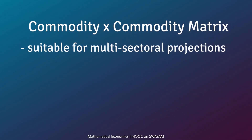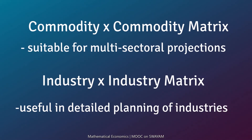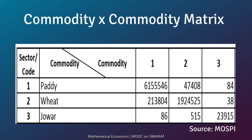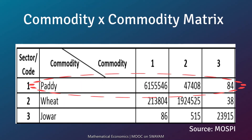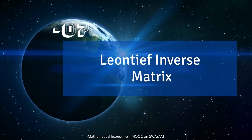The commodity by commodity input-output table is suitable for multi-sectoral projections where final demand estimates are obtained on a commodity basis. The industry by industry input-output table is useful in detailed planning of industries whose products include by-products. In a commodity by commodity table, both rows and columns represent commodity group sectors. In an industry by industry table, both rows and columns represent industry group sectors comprising a mix of different commodity groups. The row of a sector in this table gives the supply of all products and secondary products as a mix produced by the corresponding industry group for different intermediate and final uses.